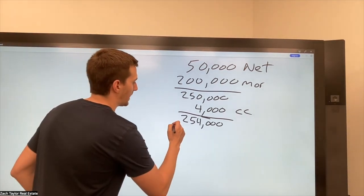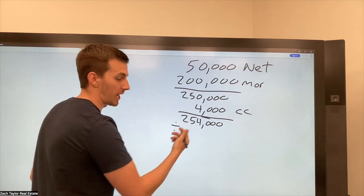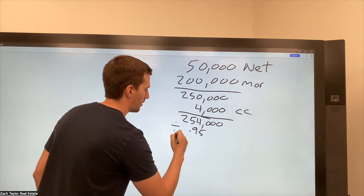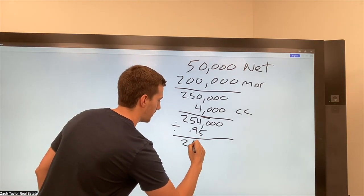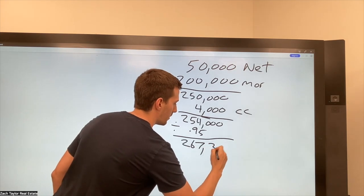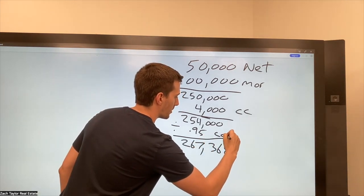So I'm going to divide this not times because we're going backwards and we're going to divide by 0.95. And then I get 267, $368 and some change. Let me label this commission.